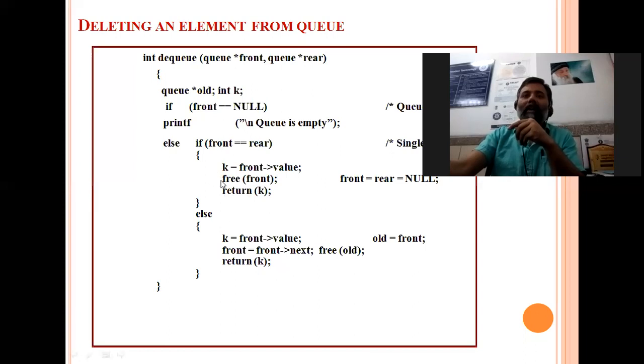After that we will use the free function, which will simply deallocate whatever memory is pointed by the front pointer. After deletion we will assign both front and rear null values, and this key can be returned here.